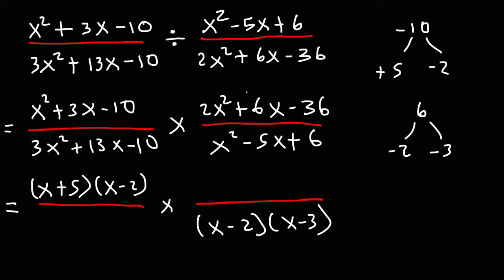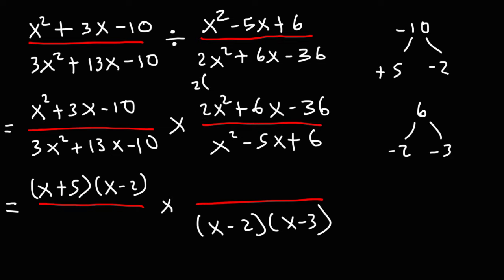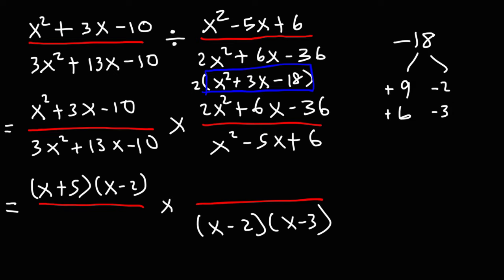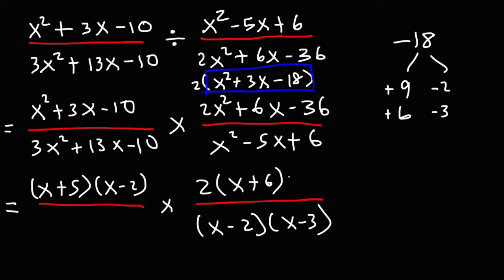For this expression, we need to first take out a 2 because all of the coefficients are even, so we take out the GCF. Dividing everything by 2, we get x squared plus 3x minus 18. Now we can factor this trinomial — we need two numbers that multiply to negative 18 but add to positive 3. 18 is 6 times 3, and if we use positive 6 and negative 3, they add up to positive 3. So we still need the 2 in front, and we can factor the trinomial as x plus 6 times x minus 3.